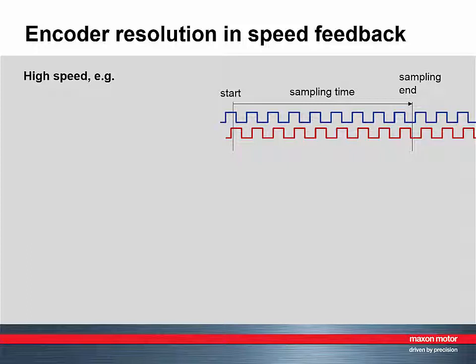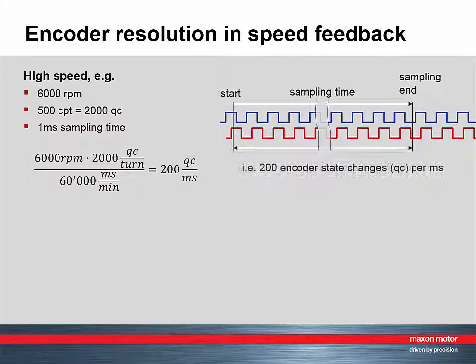At high speed, there are many state changes per cycle time. A typical example could be a motor speed of 6000 rpm and an encoder resolution of 500 counts per turn or 2000 quad counts per turn.